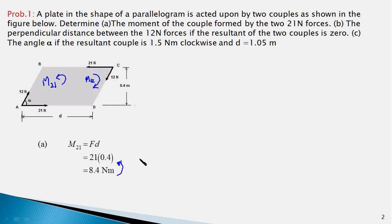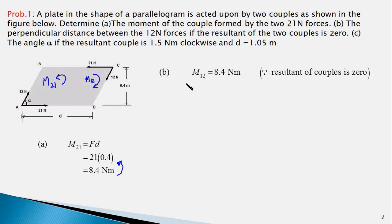Part b asks us to find the perpendicular distance between the 12-newton forces if the resultant of the two couples is zero. The distance d and angle alpha are not known, so the perpendicular distance is unknown. However, since the net couple is zero, the magnitudes of m21 and m12 must be equal. Therefore m12 is 8.4 newton-meters in the clockwise direction.